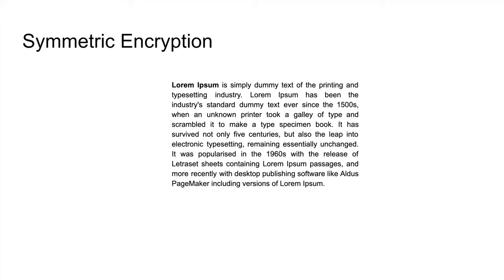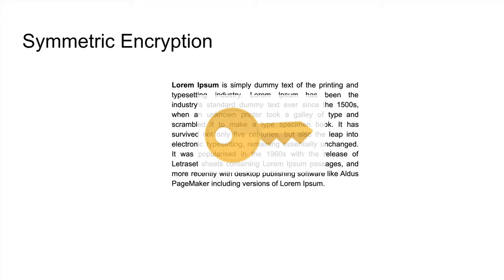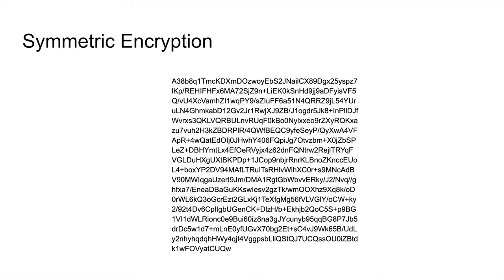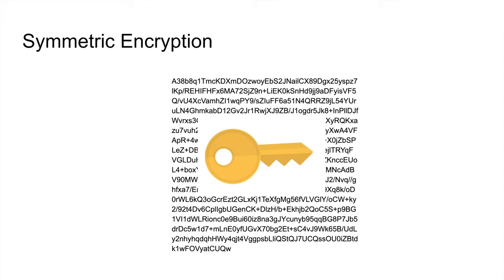The same idea applies here: use the same key to encrypt and decrypt. I have my novel and I want to encrypt it, so I use a key — let's say it's yellow. I encrypt it and get a bunch of garbage. If someone gets hold of this, it doesn't mean anything to them. To read and edit my novel, I decrypt it using the same key. The key could be a phrase or a number, and the algorithm performs arithmetic operations on every single byte to produce corresponding encrypted output.